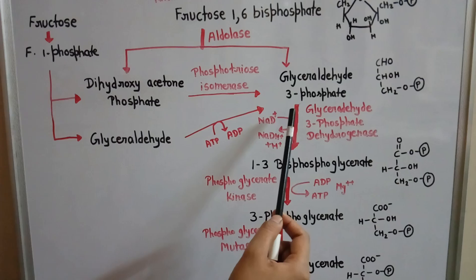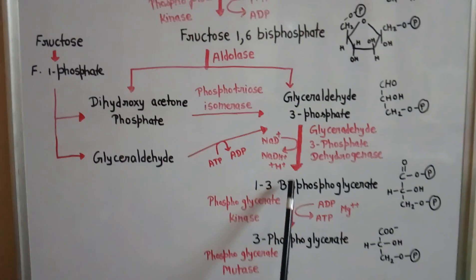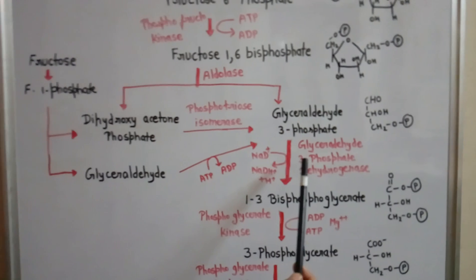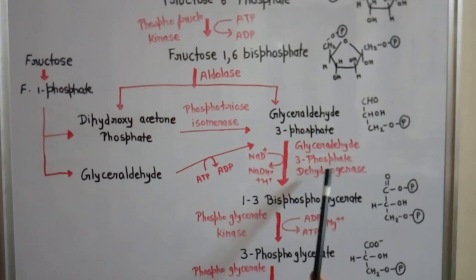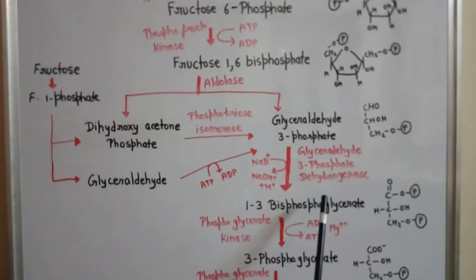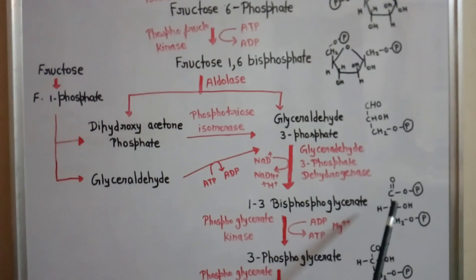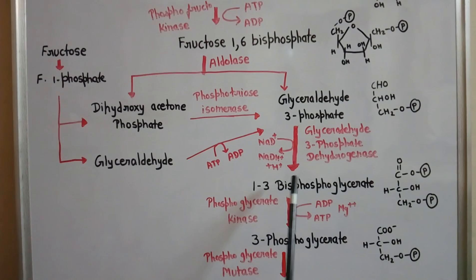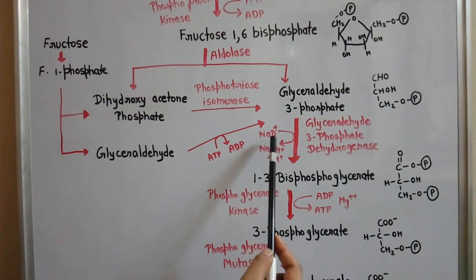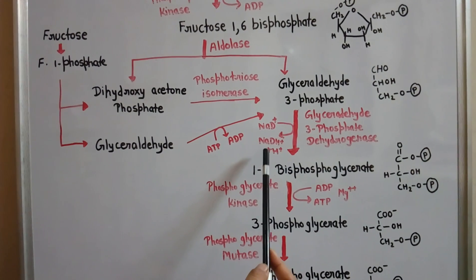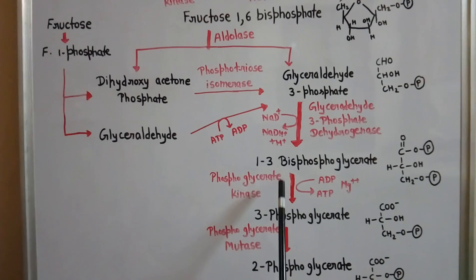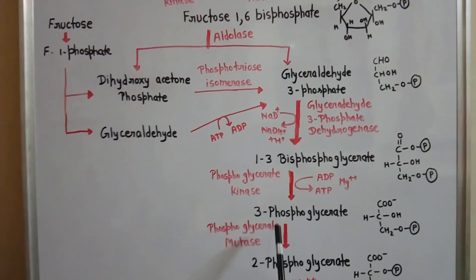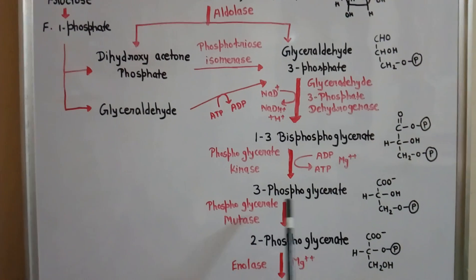Glyceraldehyde-3-phosphate is converted to 1,3-bisphosphoglycerate in the presence of the enzyme glyceraldehyde-3-phosphate dehydrogenase. In this molecule, the phosphate group is present at the first and third positions. In this process, one NAD⁺ molecule is reduced to NADH.